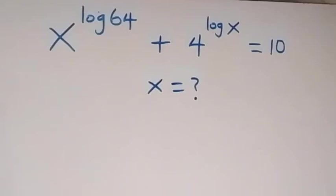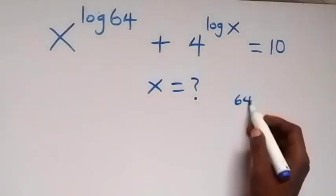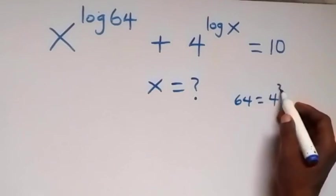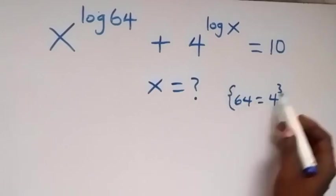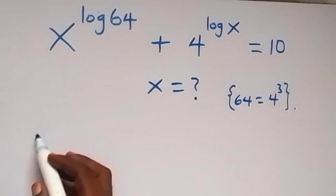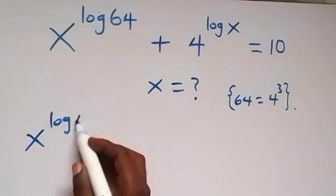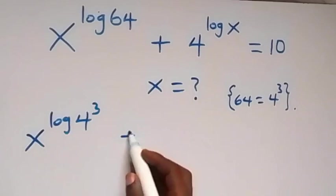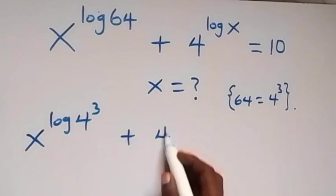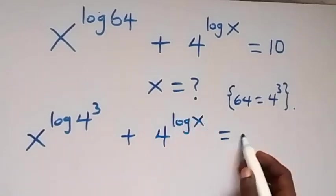Hello, you are welcome. Find the value of x in this exponential equation involving logarithms. Here, 64 can be written as 4 raised to power 3 — that is, 4 multiplied by itself 3 times. So this equation becomes x raised to power log(4³), then plus 4 raised to power log x, which equals 10.